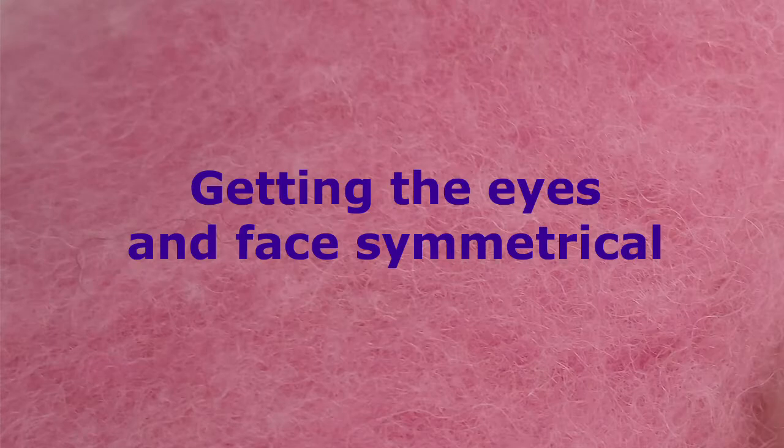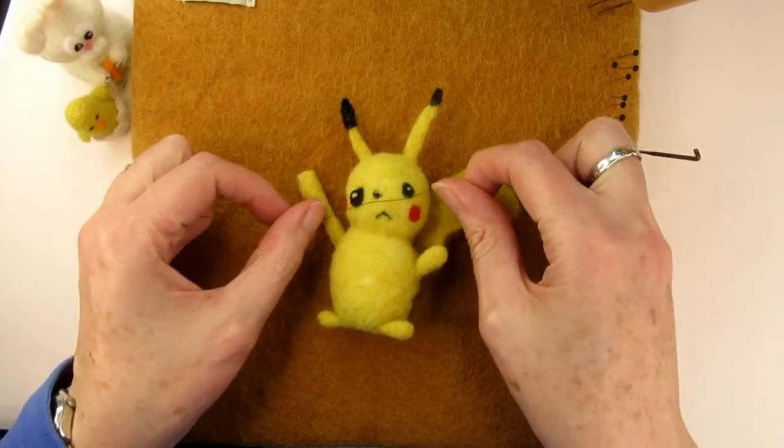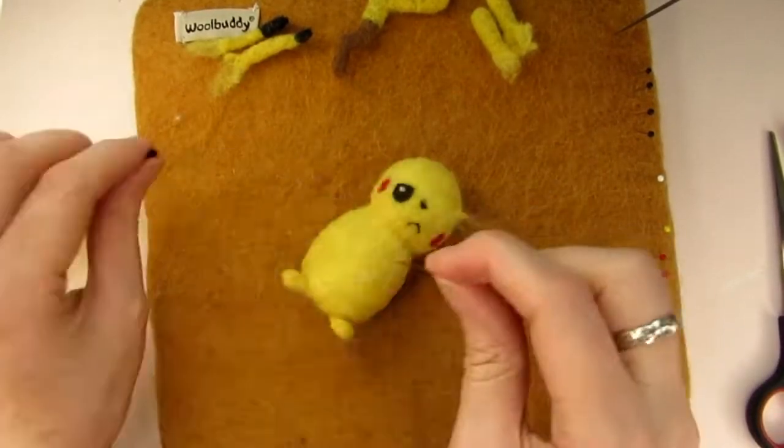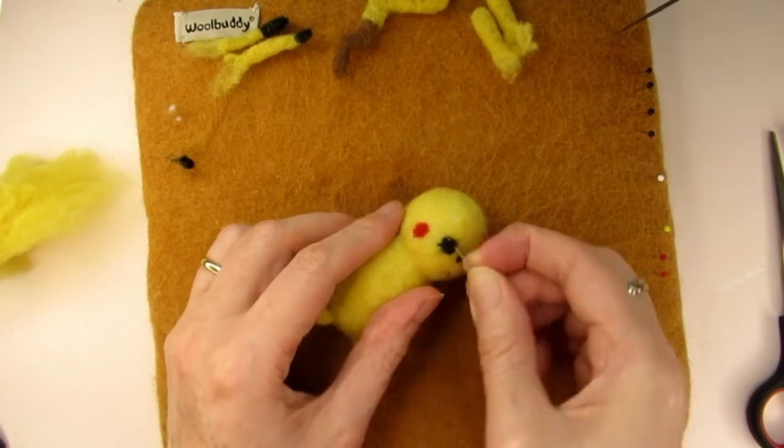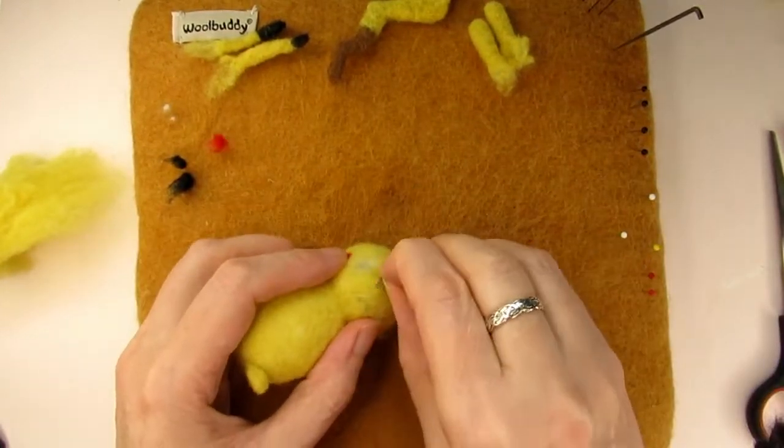Now if you're looking at your item and you think the eyes are in the wrong place or shape, don't worry you can adjust them. If you need to you can remove the wool, but make sure you're using a sewing needle or a very thick needle felting needle to tease the wool away and pull it out. I have a video that goes into more detail on how to correct mistakes. I'll put a link in the description below.